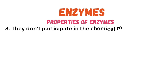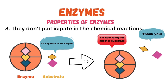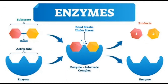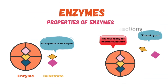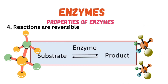Enzymes do not take part in the chemical reactions they catalyze. At the end of the chemical reaction, they remain unchanged and are not used up. Enzymes work by binding onto substrates to facilitate the reaction, but at the end of the reaction the enzyme releases itself unchanged and is available to catalyze more reactions, meaning it can be used again and again.